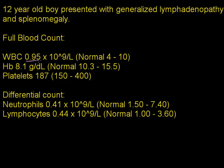I put the normal in brackets so that you could compare. He also had a low hemoglobin and anemia, but his platelet count was actually normal. If you look at the differential count, the neutrophils were very low and the lymphocytes as well.